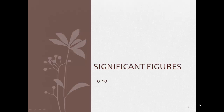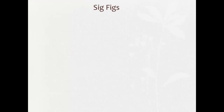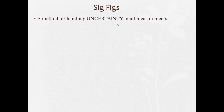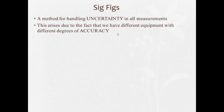Welcome to our video on significant figures, also referred to as sig figs. Significant figures are a method for handling uncertainty in all measurements. This arises because we have different equipment with different degrees of accuracy. We can't treat something measured with a less accurate instrument the same mathematically as something measured with a more accurate instrument, so we always need to keep track of significant figures.